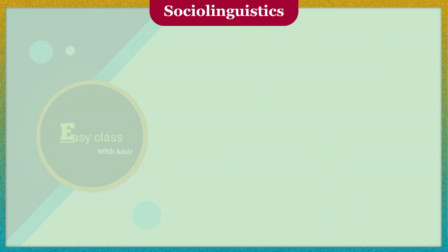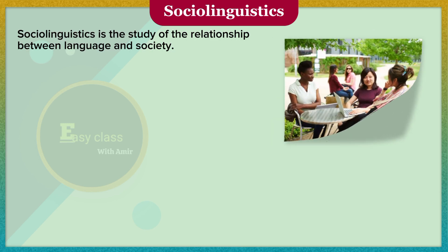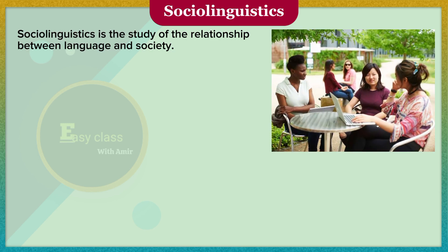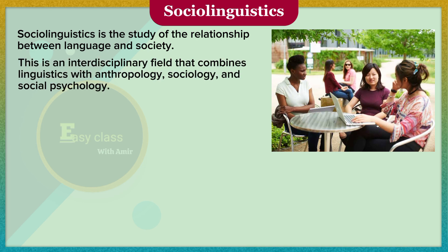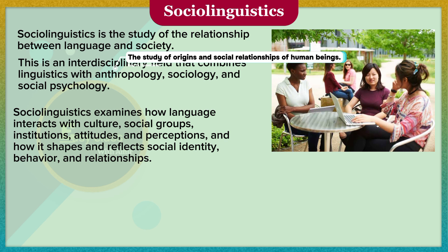Sociolinguistics is the study of the relationship between language and society. This is an interdisciplinary field that combines linguistics with anthropology, sociology, and social psychology. Sociolinguistics examines how language interacts with culture, social groups, institutions, attitudes, and perceptions, and how it shapes and reflects social identity, behavior, and relationships.